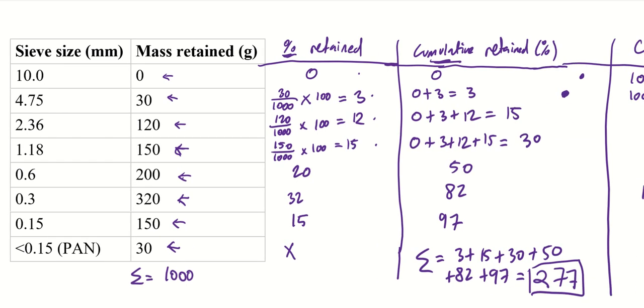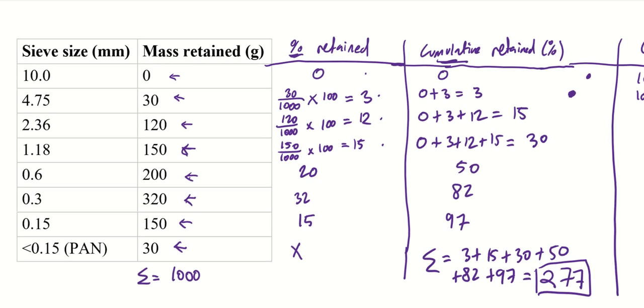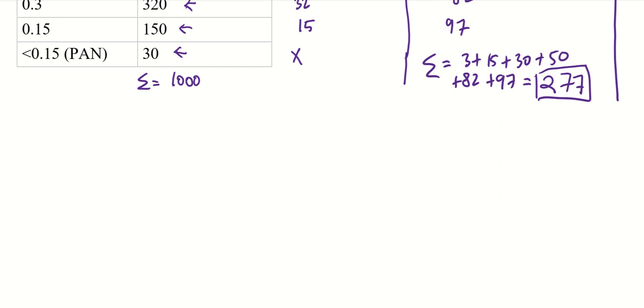Okay. But we're not done yet. Because we need to calculate the fineness modulus. And to calculate the fineness modulus, remember that's equal to the value that we had highlighted. So that's this value over here, 277. And we need to divide that by 100. And we get 2.77.